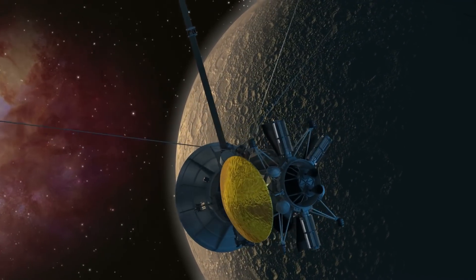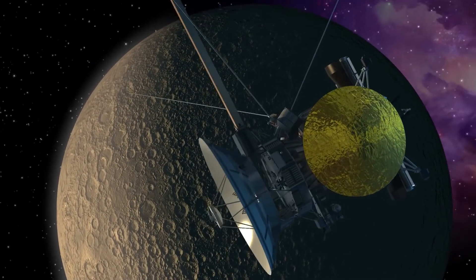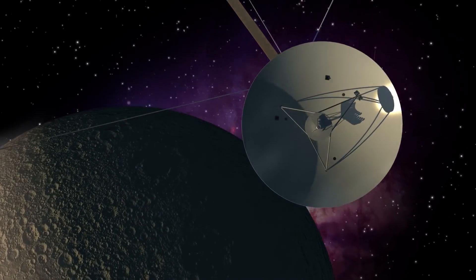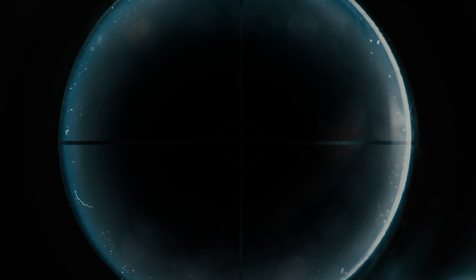Finally, Planck Space Observatory provided the highest resolution and sensitivity measurements. Anisotropy was confirmed also by a series of ground and balloon-based experiments. All these results could even assess the geometry of the universe, concluding that it is approximately flat rather than curved.